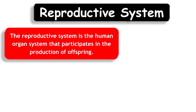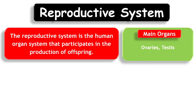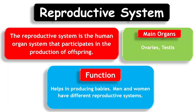Reproductive System. The reproductive system is the human organ system that participates in the production of offspring. Main organs: Ovaries and Testes. Function: Helps in producing babies. Men and women have different reproductive systems.